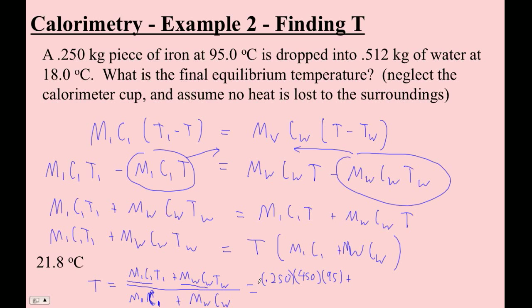If there's four different things that are mixed together at different temperatures, it's always MC, the original temperature, MC, the original temperature. And then you always divide by the sum of the masses times specific heats.